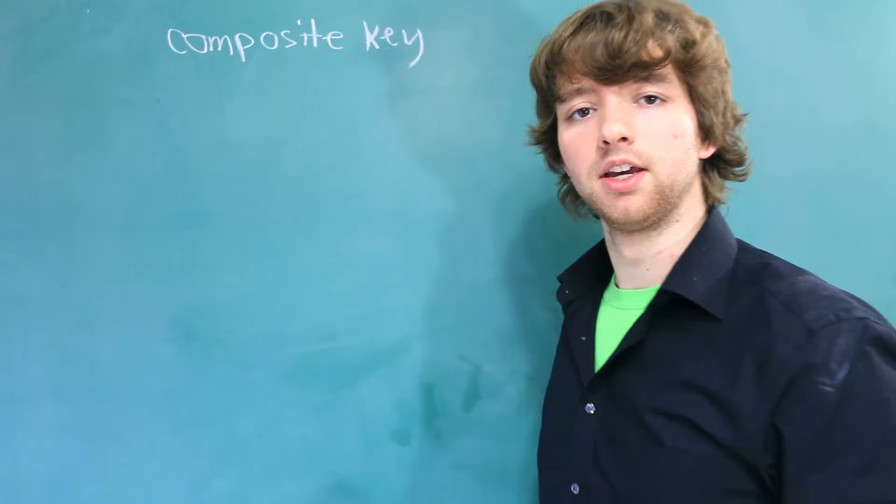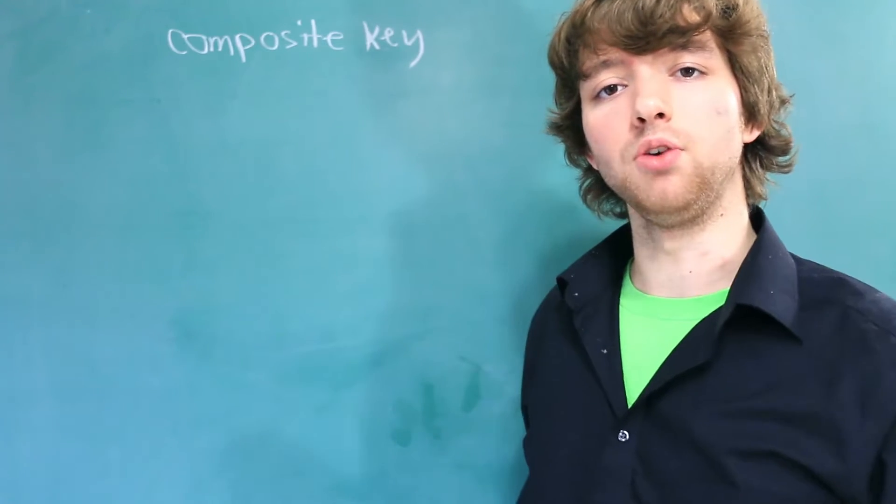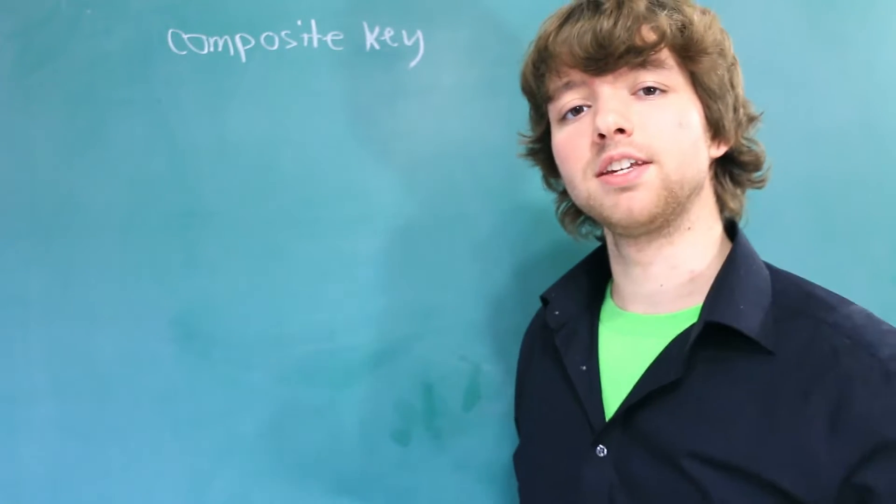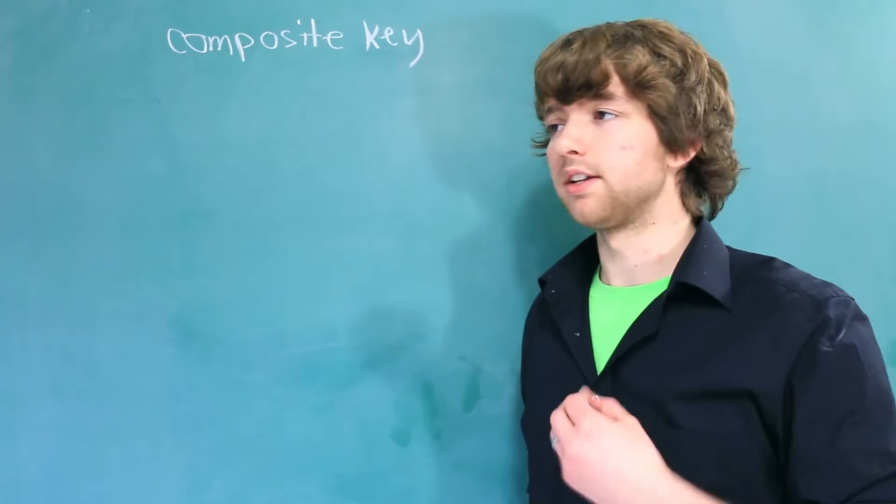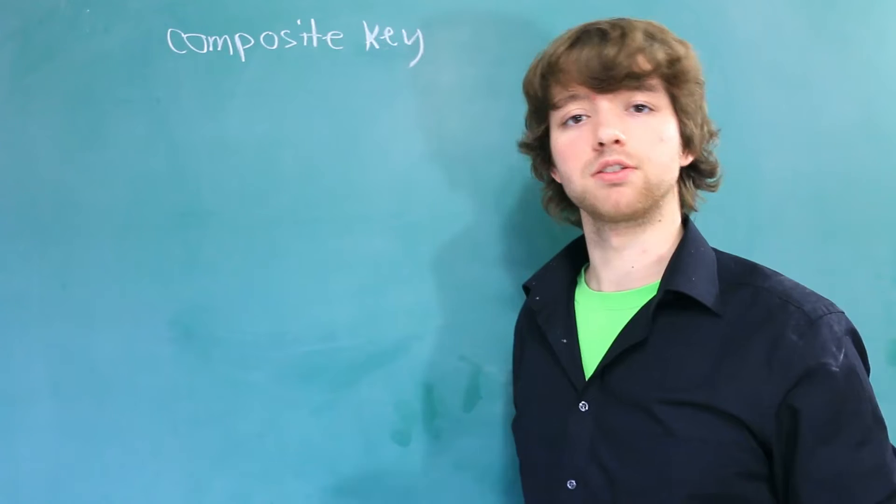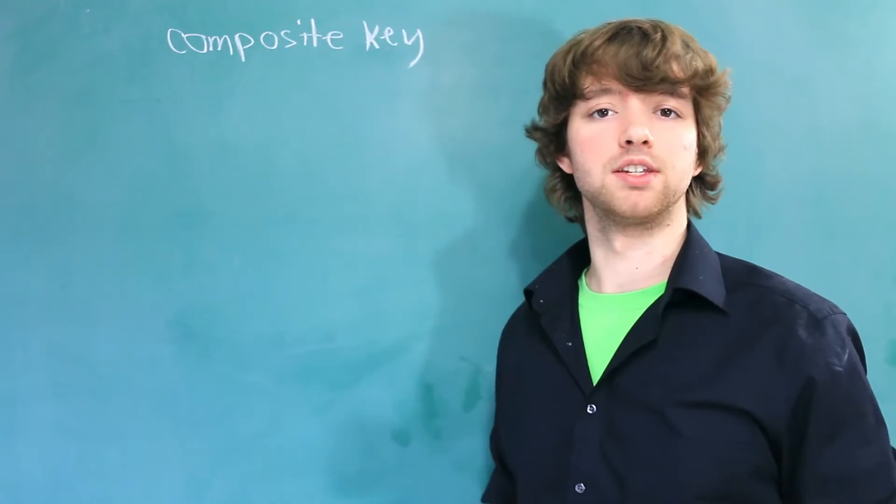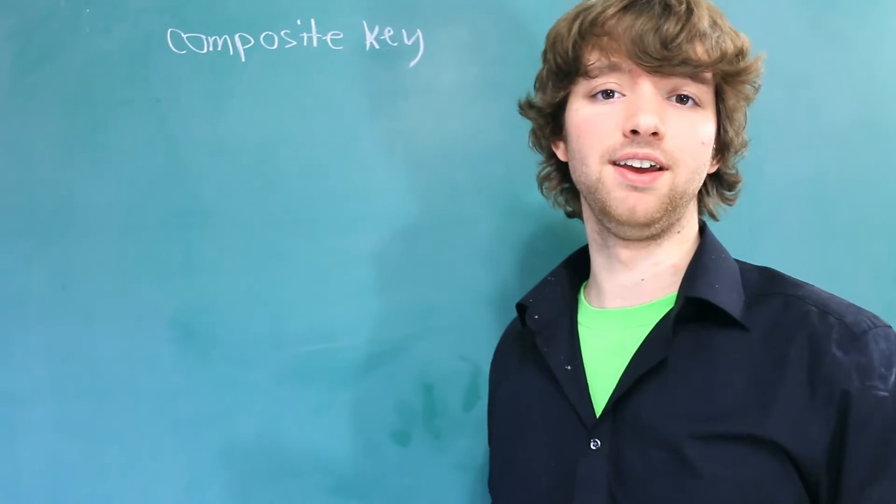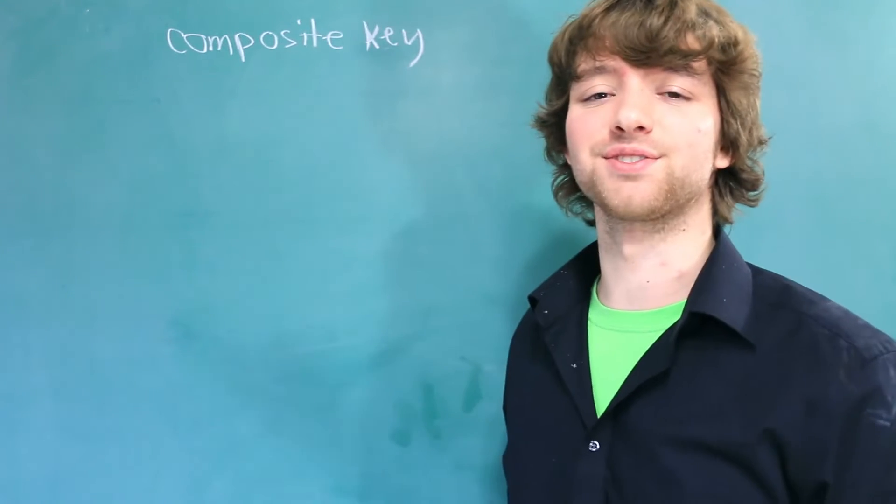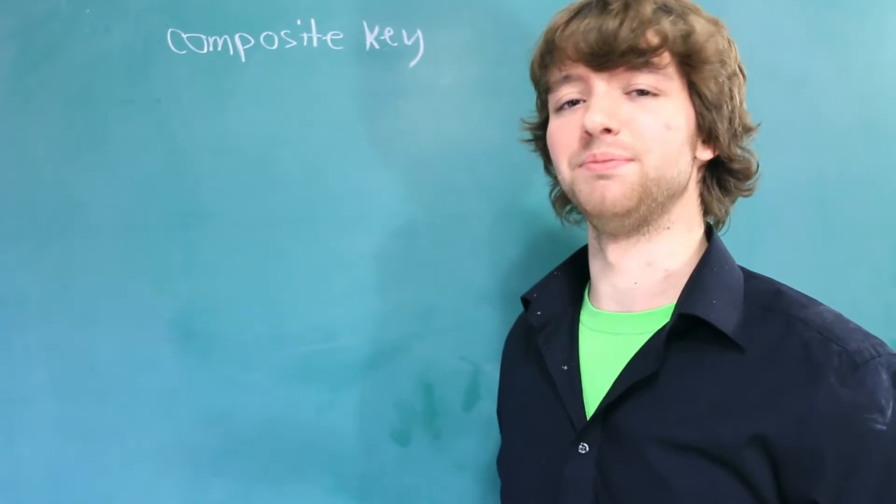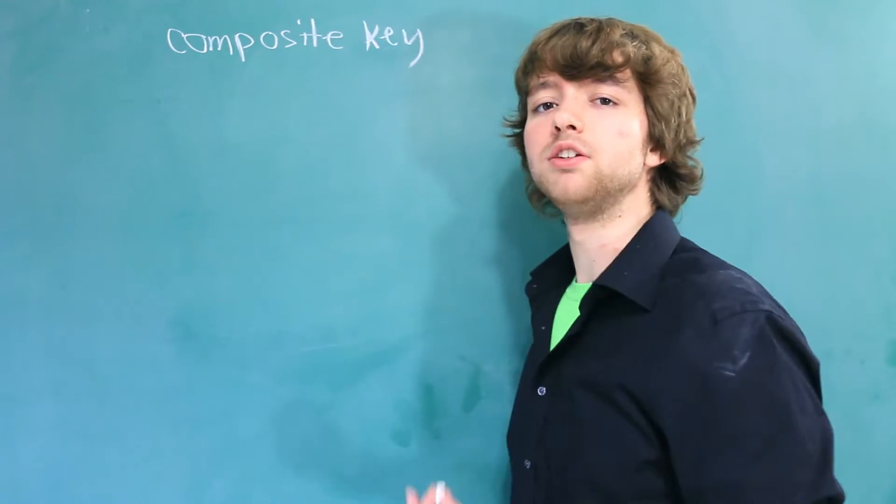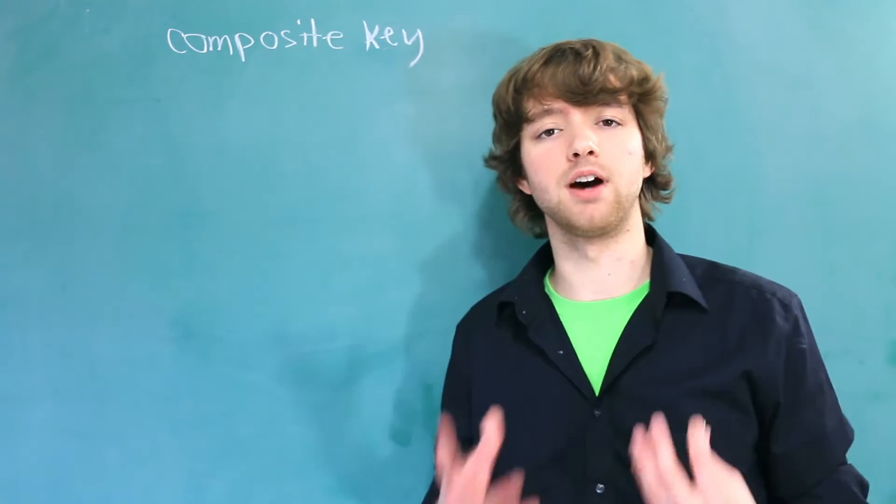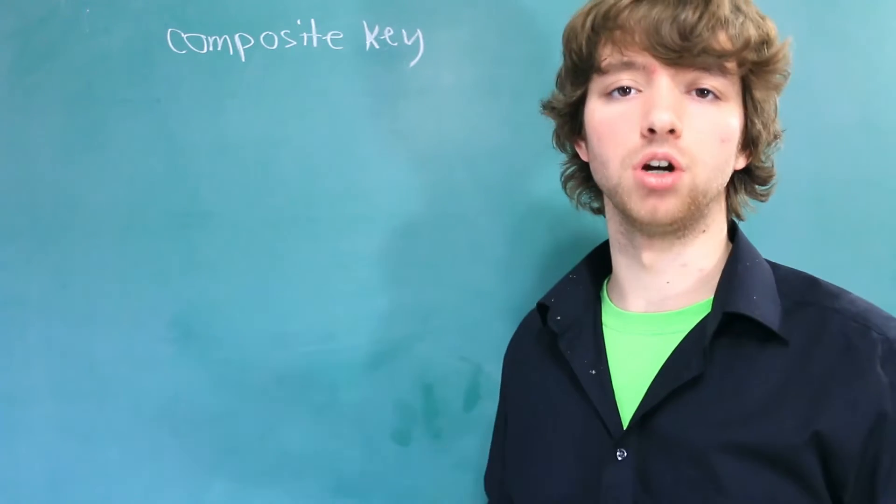Now what is a composite key? A composite key is a key or a primary key that consists of multiple columns. So more than one column. It doesn't have to be 2, it can actually be more than that, so you could have a primary key consisting of 10 columns if you wanted. When would you want to do this though? You would need to do this if one column is not enough to make an entire row unique.